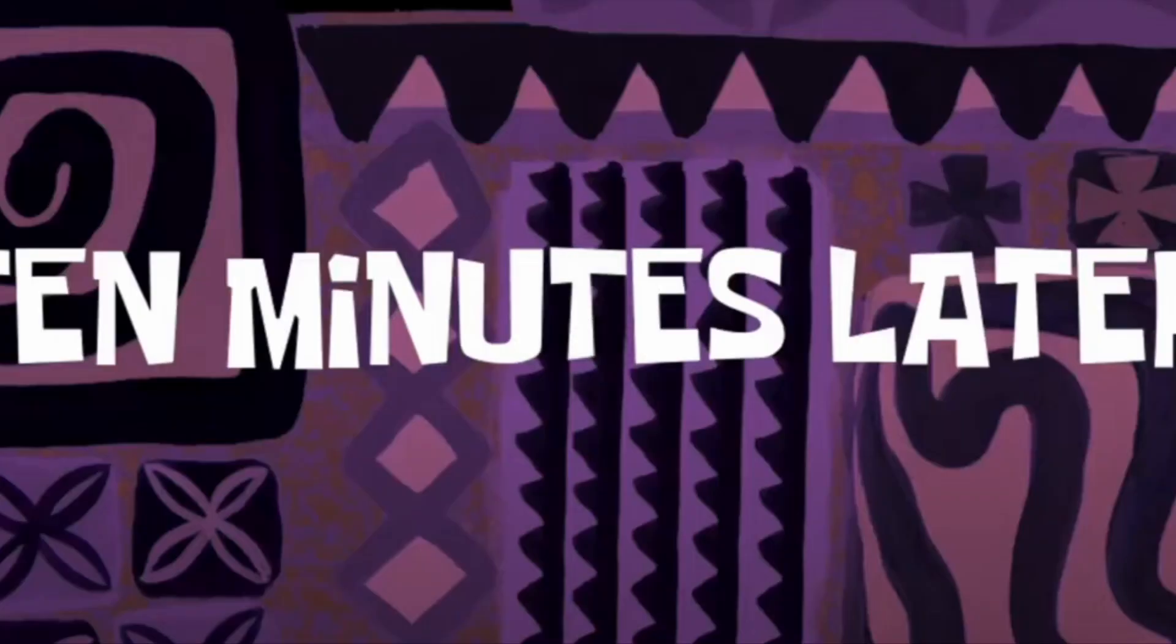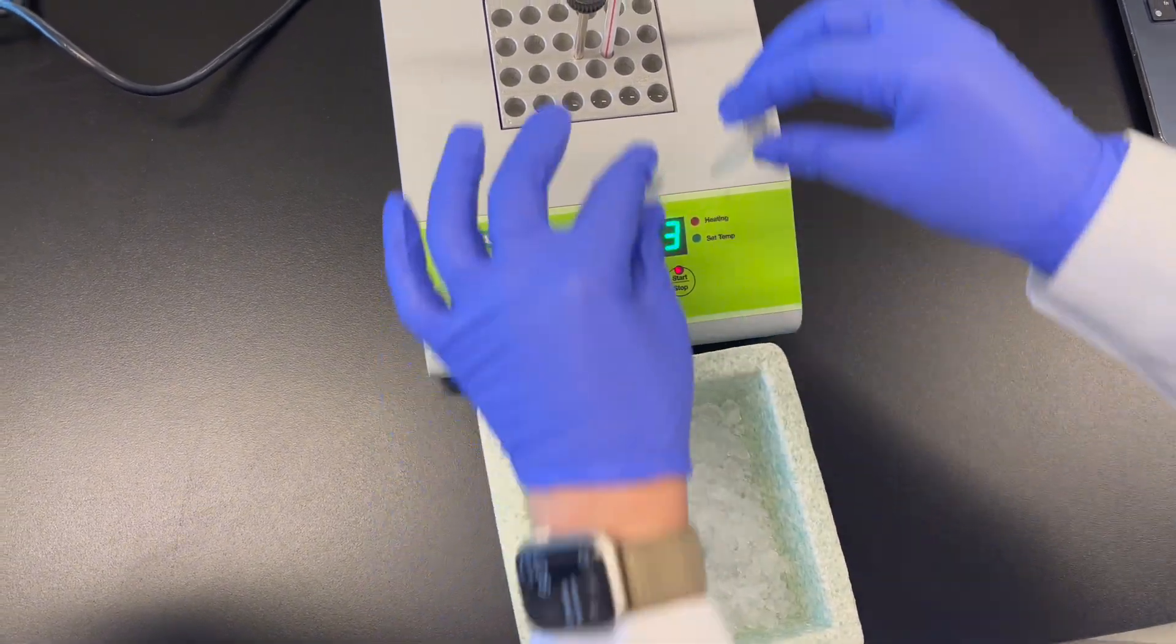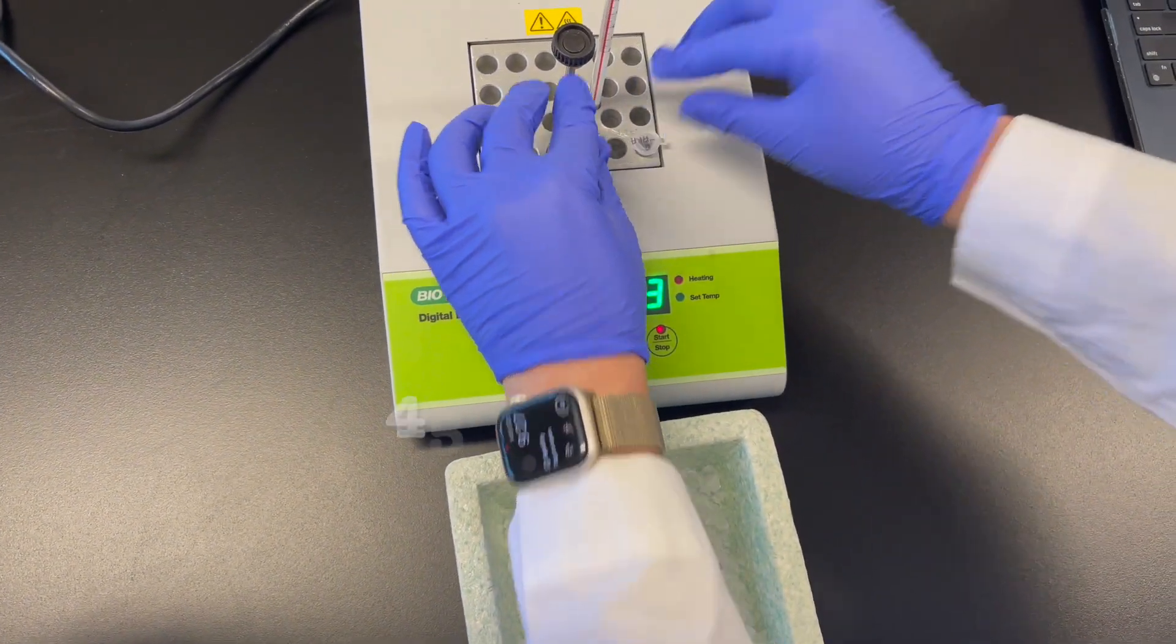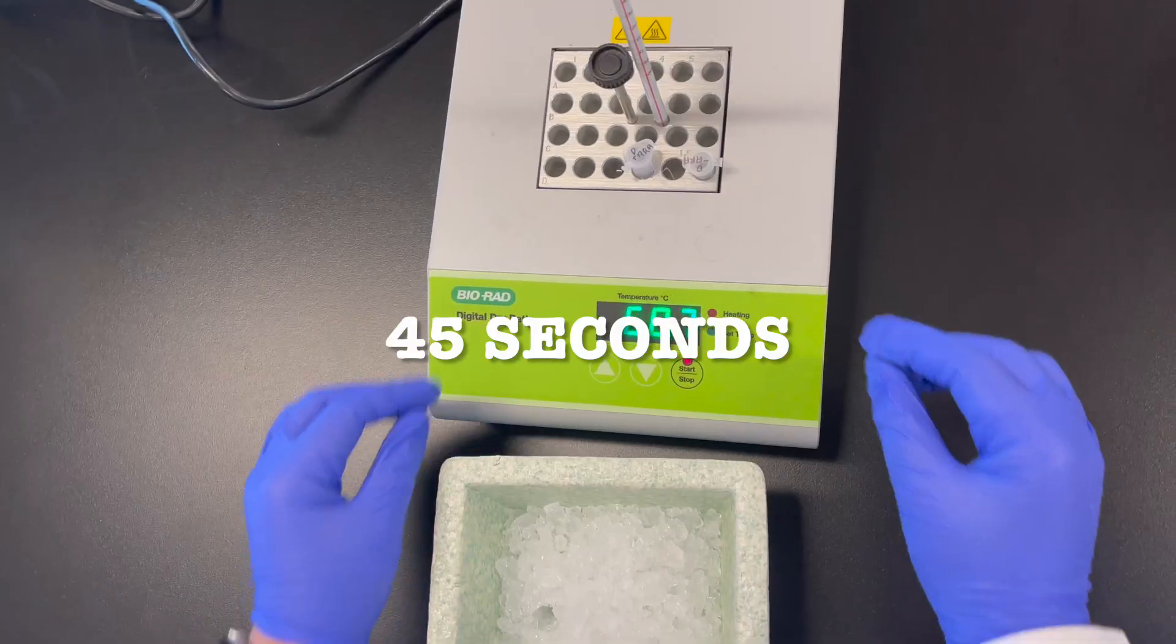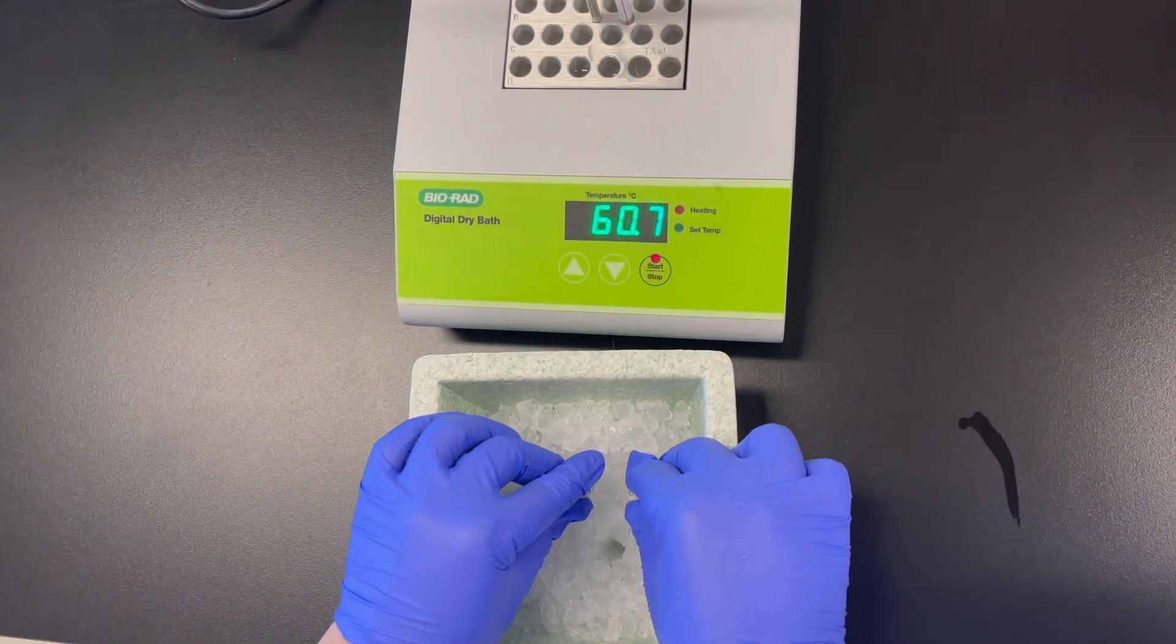10 minutes later. After placing the tubes on ice for at least 10 minutes, place them into the heat shock for 45 seconds. Then place the tubes on ice for 2 minutes.